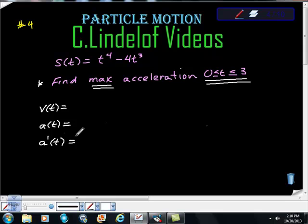that maximums occur at either endpoints, at here or here, or where we find critical values, and we want max acceleration, so we want the derivative of acceleration.